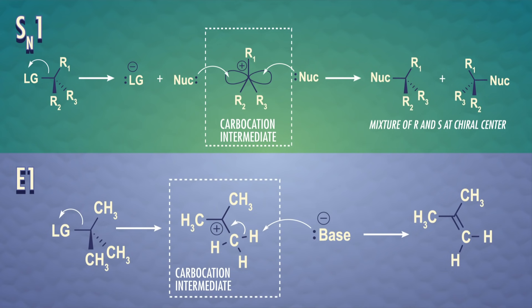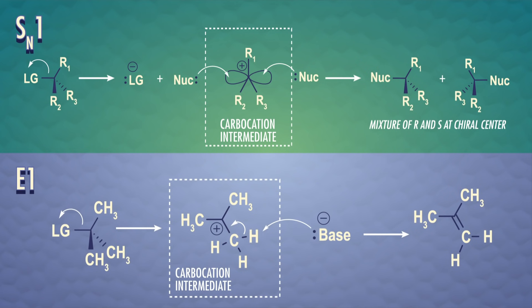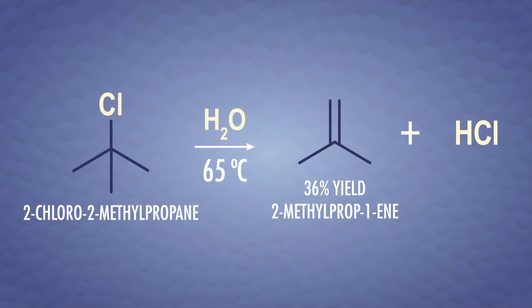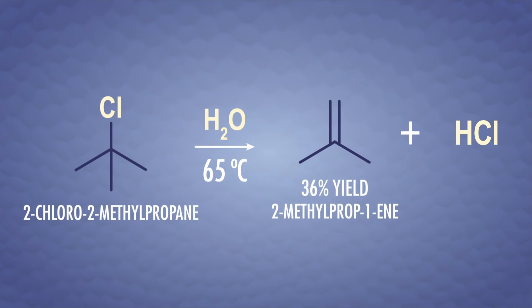In E1 reactions, the first step is that a carbocation forms on the alpha-carbon, the same as in SN1. Both of these mechanisms are unimolecular, which is why they have a 1 – the reaction rate depends on one molecule, the substrate. Next, the nucleophile acts as a base and takes a proton from a beta-carbon. That's what makes it elimination. Then the electrons that were in that beta-carbon-hydrogen bond form a pi bond, and a double bond forms between the alpha and beta carbons. As an example, 2-chloro-2-methylpropane reacting under neutral conditions forms an alkene, though there's a low yield because the alkene is the minor product. SN1 and E1 mechanisms often compete, giving us a mix of products.